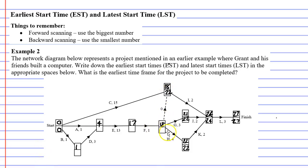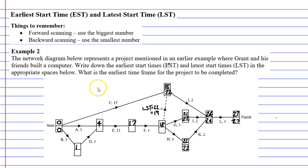This vertex has three different edges connecting to it. 22 minus 0 is 22 — one option. Another option is 22 minus 3, which gives us 19. The third option, 22 minus 4, gives us 18 as our latest start time. So we have three options, but for backward scanning we use the smallest number, so we use the latest start time of 18.